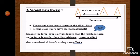What about the second class lever? The second class lever conserves effort in all cases, because it has the resistance between the fulcrum and the effort force. If asked why the second class lever conserves effort, or why it has mechanical benefit, it is because the force arm is always longer than the resistance arm, so the force is always smaller than the resistance.